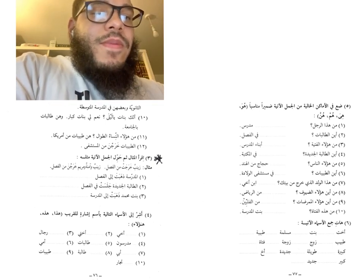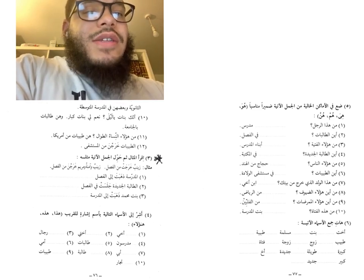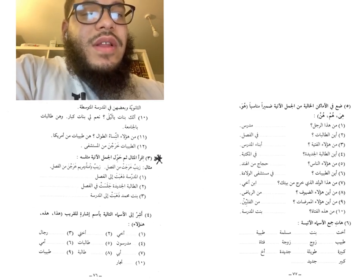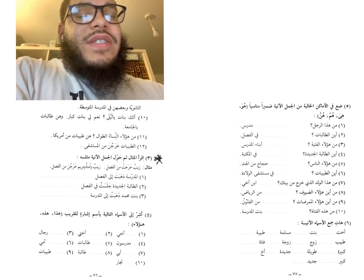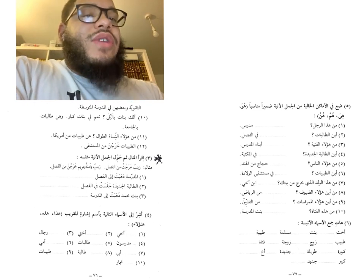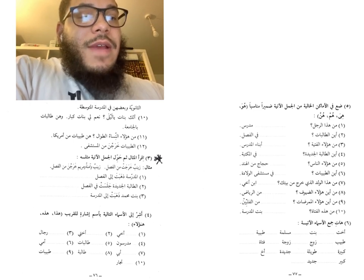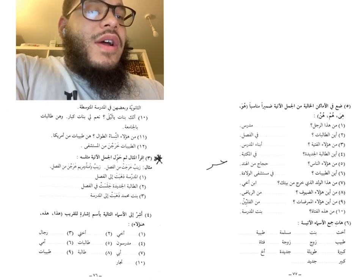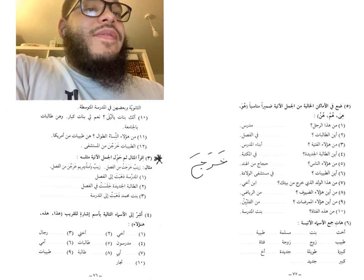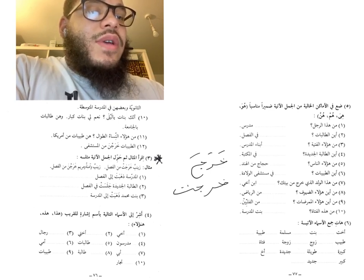Exercise three says: read the example and then change the sentences like it. The example: Zainab kharajat min al-fasli — 'Zainab left the classroom.' Then: Zainab wa Aminatu wa Maryam kharajna min al-fasli. Now we're introducing the attached pronoun of the plural verb. If you have kharajah — 'he left' — and kharajat — 'she left'...